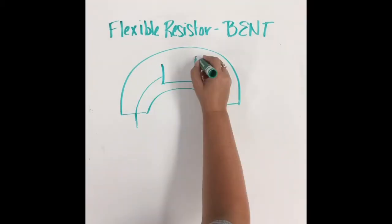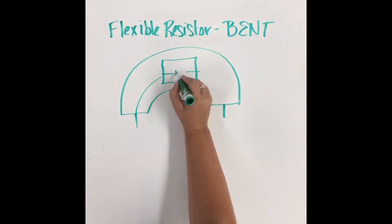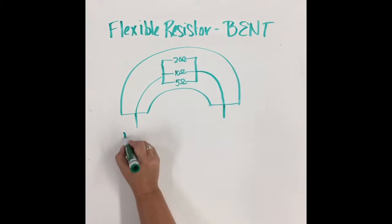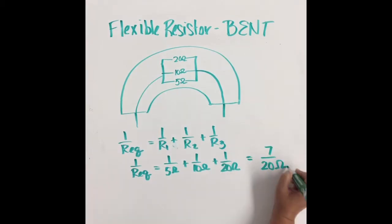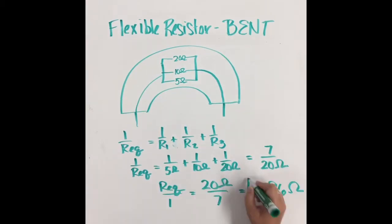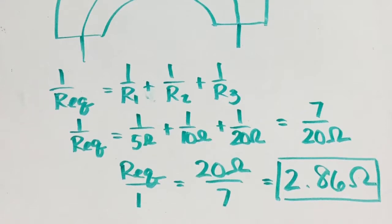Maybe when we bend our resistor, there is a different resistance at different points throughout the material. If we simplify this to consider the pathway through the middle of the resistor, the pathway near the top of the bend, and the pathway near the bottom of the bend, we would expect the resistance at the top to increase because we've stretched this part of the material.